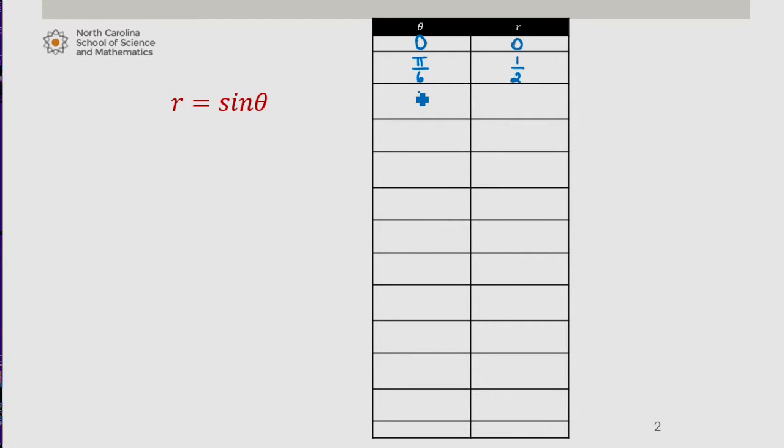Pi over 3, sine of that is root 3 over 2. Pi over 2, sine of pi over 2 is 1.